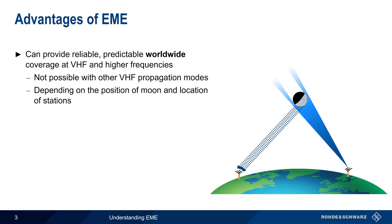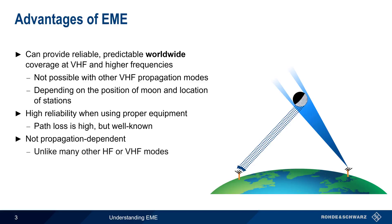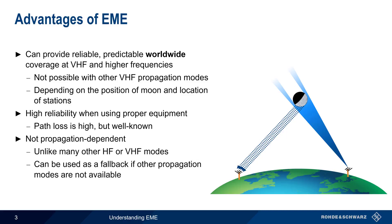However, once this condition is satisfied, EME is highly reliable when using proper equipment, in large part because although the path loss is very high, it's also well known and relatively constant. Another advantage of EME is that it's not dependent on ionospheric or tropospheric propagation conditions, unlike most other HF or VHF propagation modes. This in turn means that EME can be used as a backup or fallback method if communications do not support using other propagation modes.